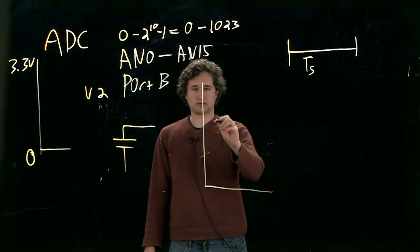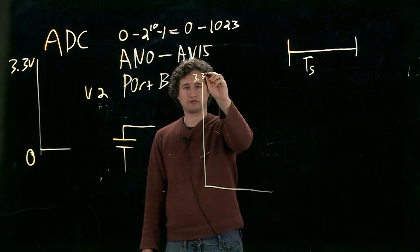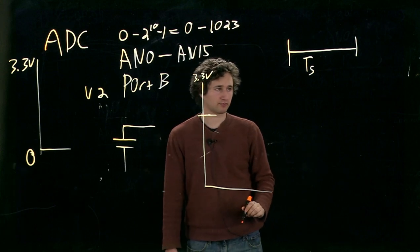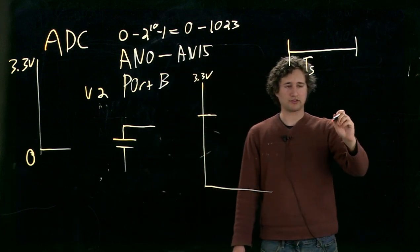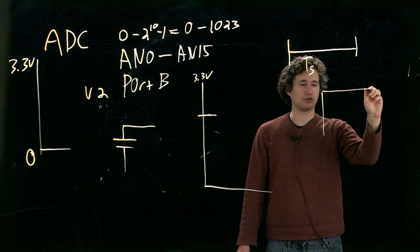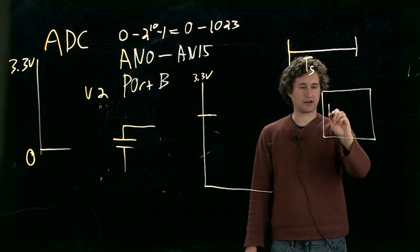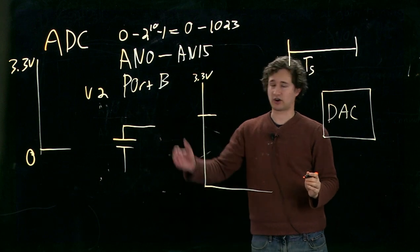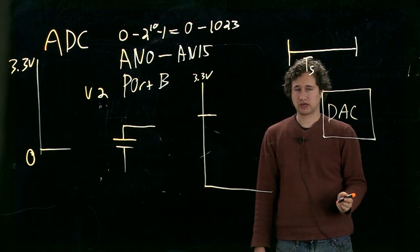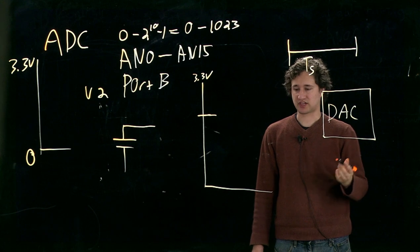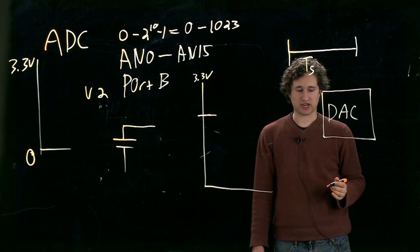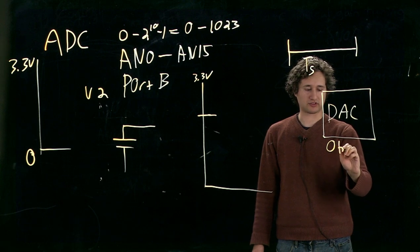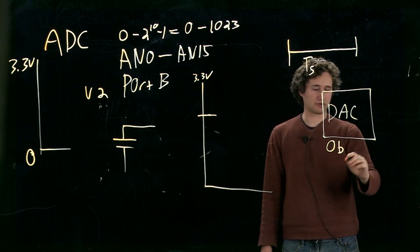And just to show this graphically, this is 3.3 volts. Let's say the voltage is here. So on the PIC, there's a device called a digital-to-analog converter, which is essentially the opposite of an analog-to-digital converter. Here, we can take numbers. On the PIC, it takes 10 bits, but for this example, let's just say it takes 3 bits.